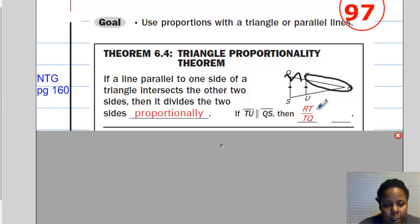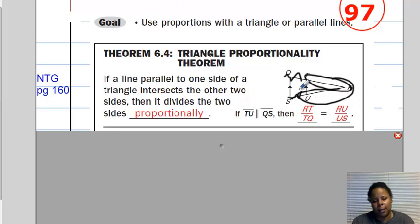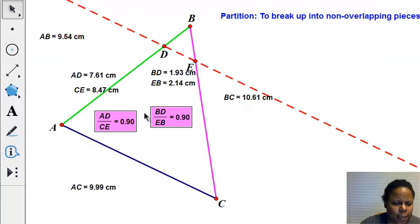That ratio should also be equal to, any ideas? Well, if you said RU is equal to RU over US, you'd be absolutely correct, equal to RU divided by US. The ratios are equal, which means that there's some proportionality occurring, even though the values are not equal. As we can see in this case, 7.61 over 8.47 is not congruent to 1.93 over 2.14.